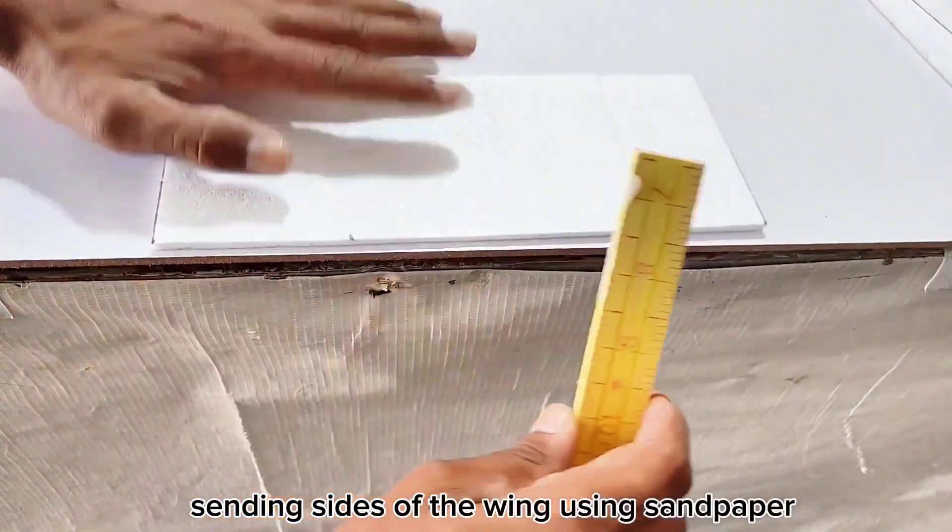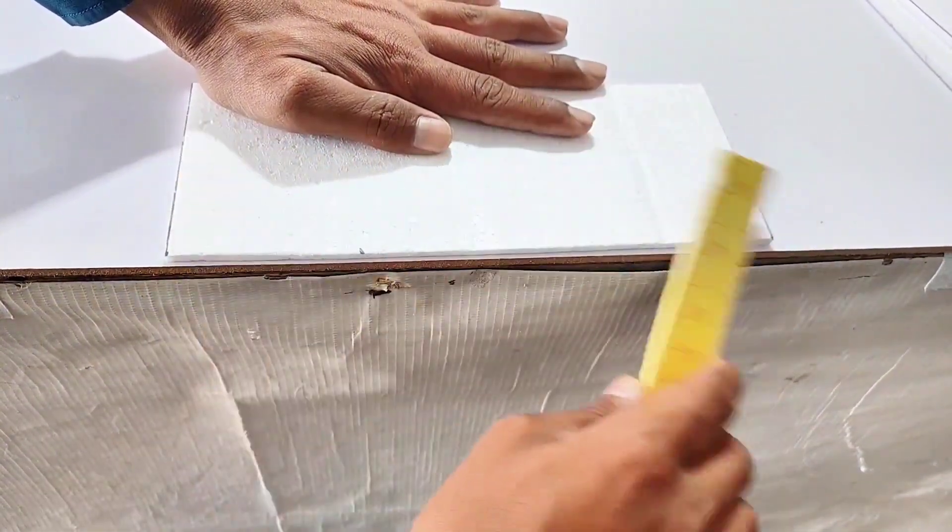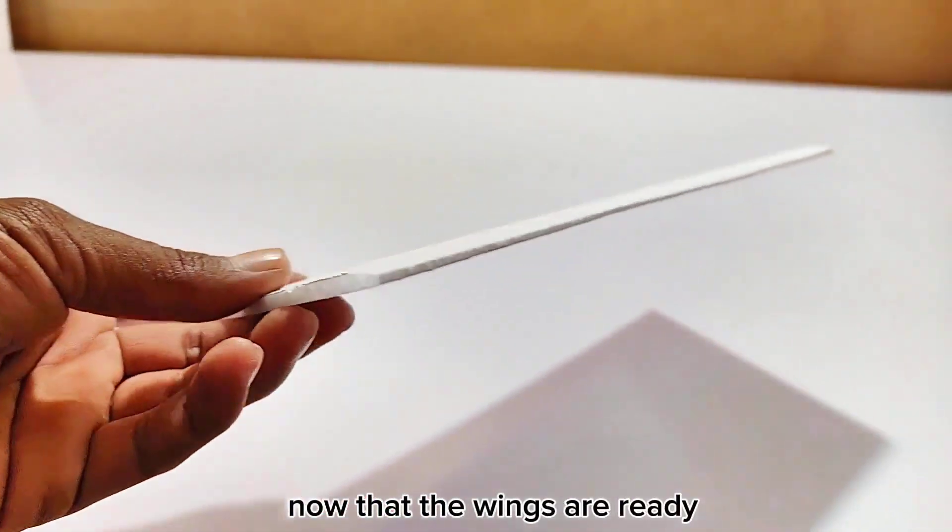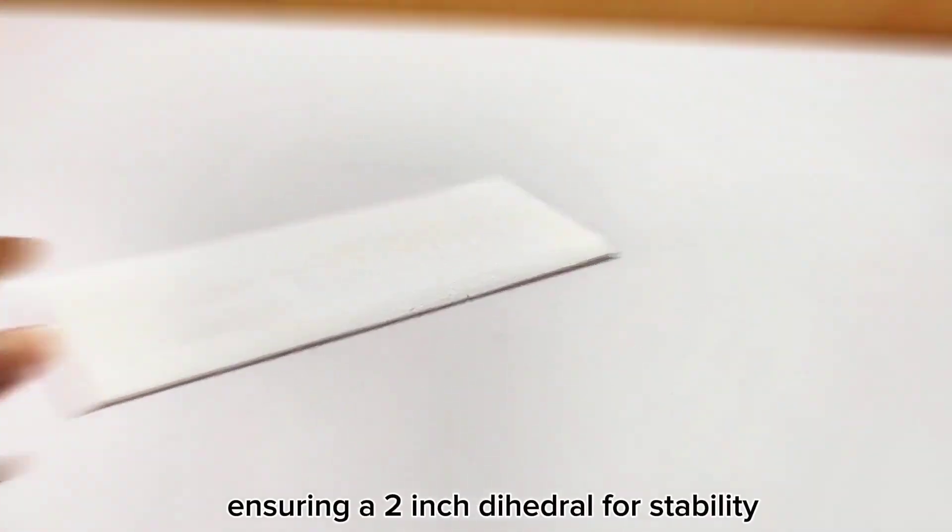Sanding sides of the wing using sandpaper. Now that the wings are ready, let's join them together using a glue gun, ensuring a 2-inch dihedral for stability.